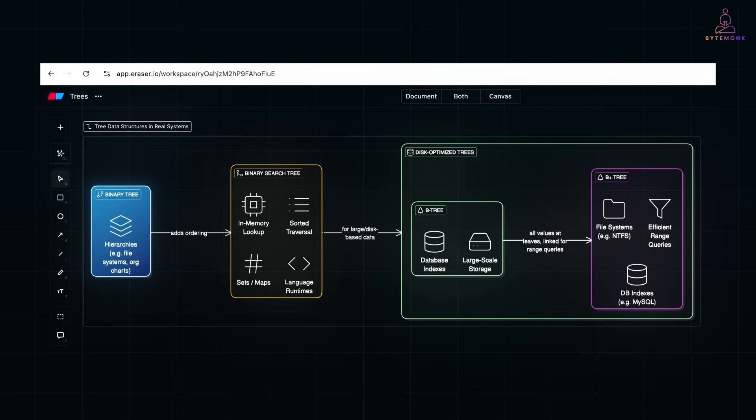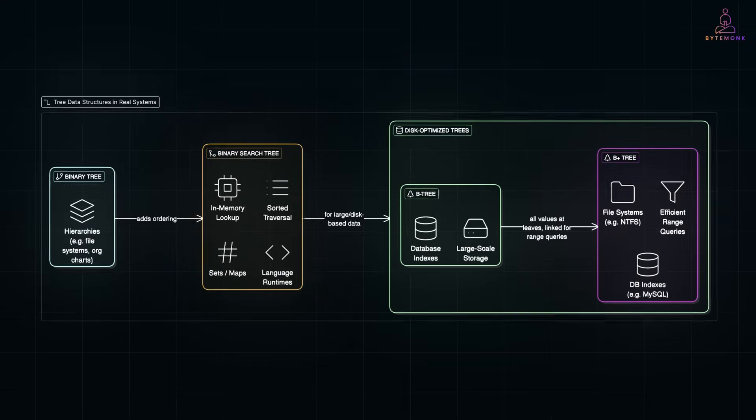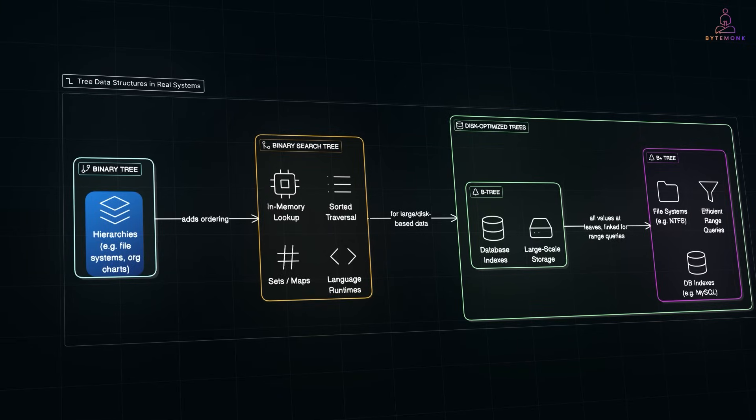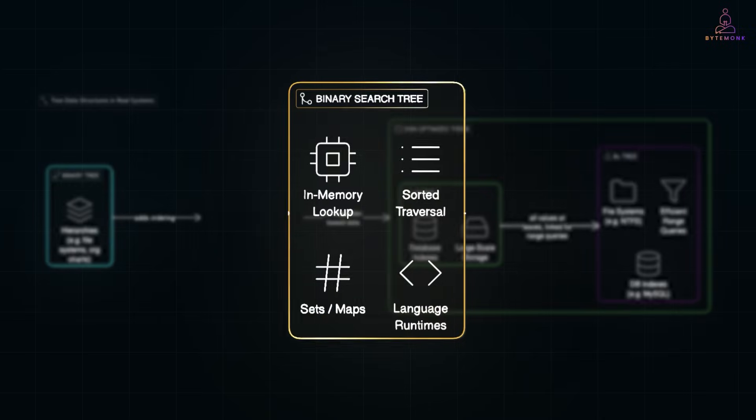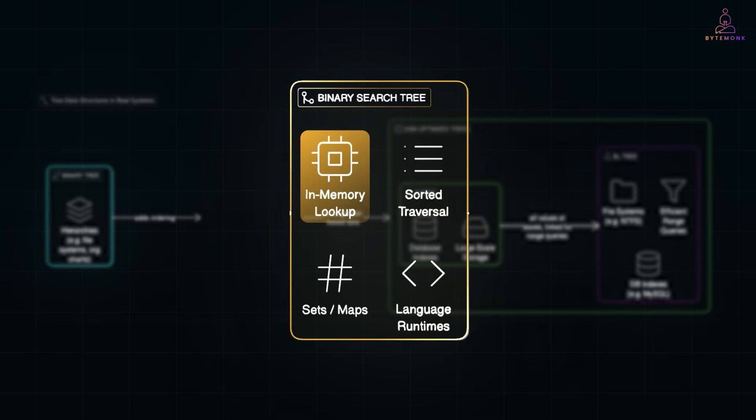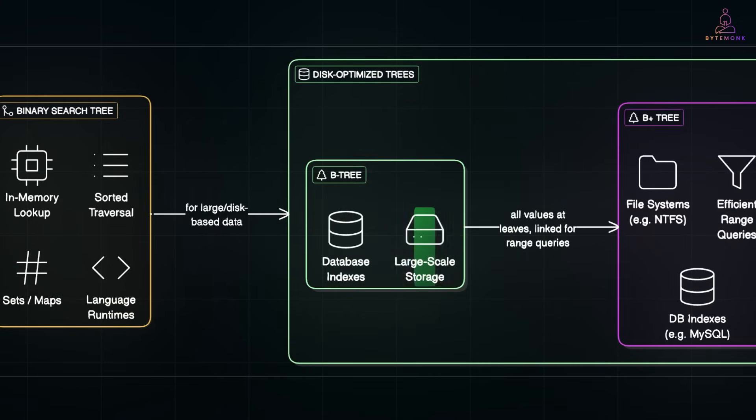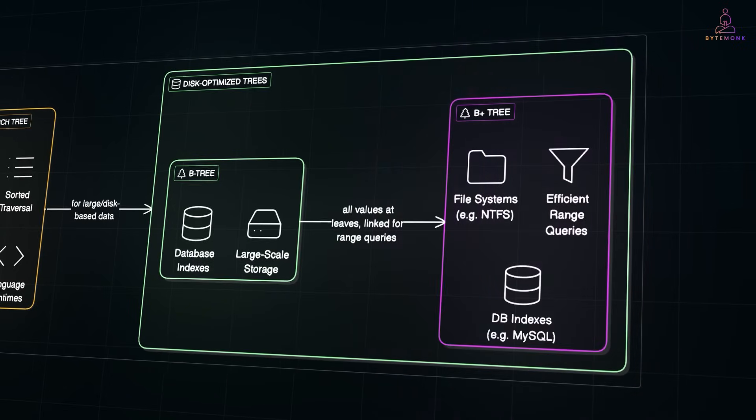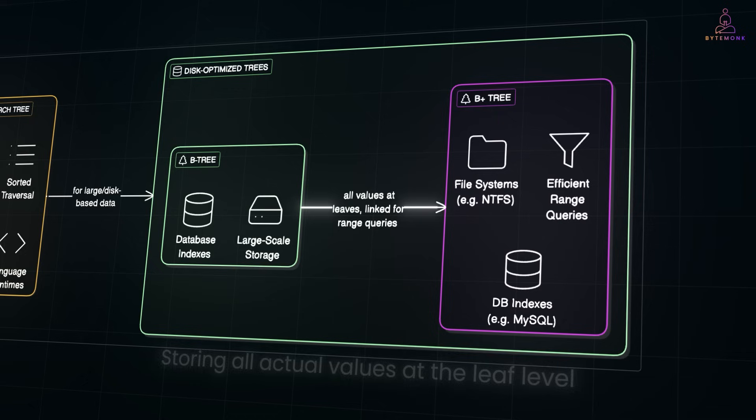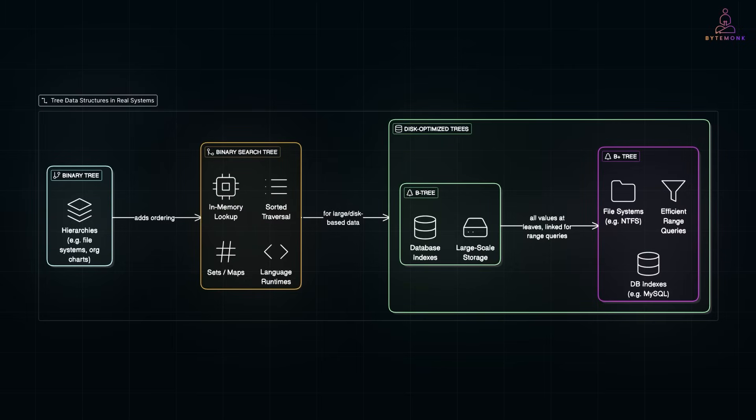A binary tree is a basic structure. Each node has up to two children, and it's useful for representing hierarchies like file systems or organization charts. A binary search tree adds ordering. It's great for in-memory data where you need fast lookup and sorted traversal, like implementing sets, maps, or building indexes. A B-tree is designed for systems that read from disk. Instead of just two children, each node can have many, which reduces the number of disk reads. They are self-balancing and optimized for large-scale storage. A B+ tree takes it a step further by storing all actual values at the leaf level and linking them together. That makes range queries extremely efficient, which is why B+ trees are used in most databases and file systems today.